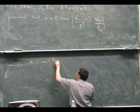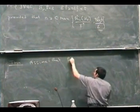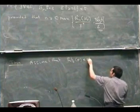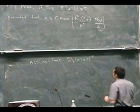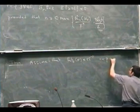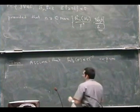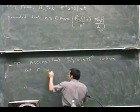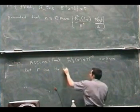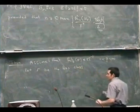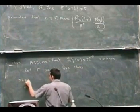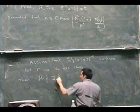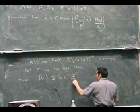So that was done using, first of all, knowledge of the fat-shattering dimension of the original class, which gave you — using the covering result — an estimate of the covering numbers of that class. Then using the covering numbers of F you computed the covering numbers of the star-shaped hull of F. And then you used the entropy bound and the connection between the empirical radius and the actual radius, which gave you an estimate on the Rademacher averages.